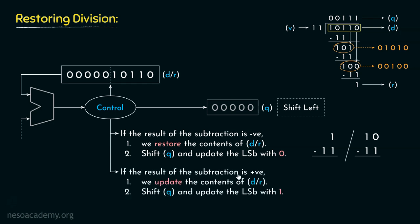If the result of the subtraction is positive, we update the contents of DR with the new result. Since the subtraction was possible and positive, the quotient bit for that step is set to 1. Similarly, we shift Q left and update the LSB with 1 when the subtraction result is positive.